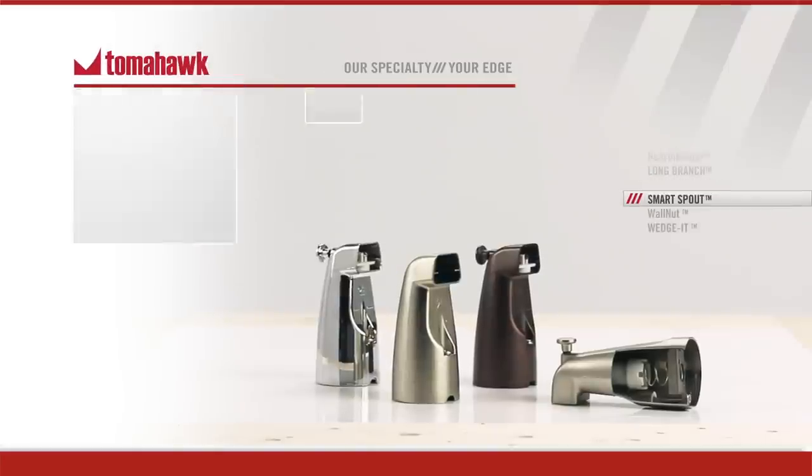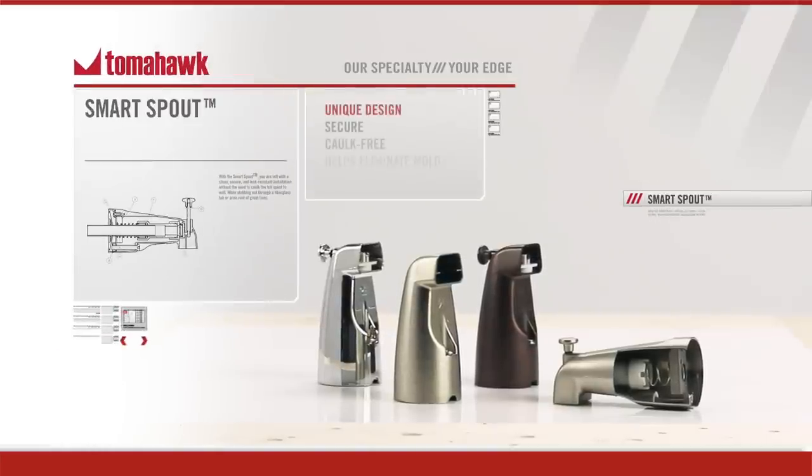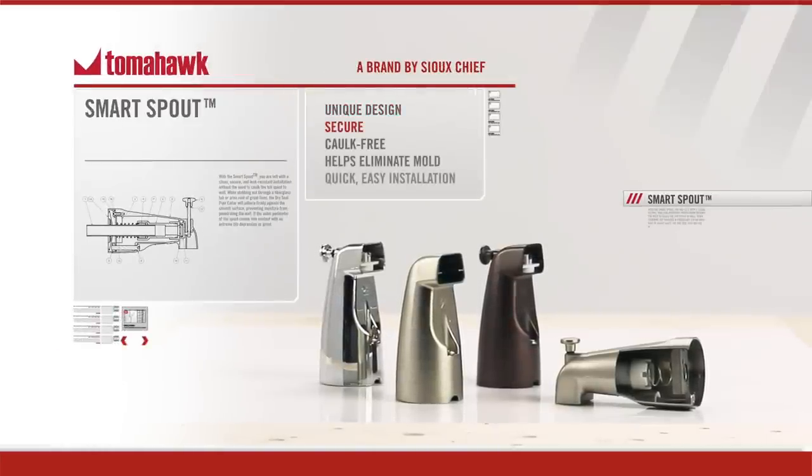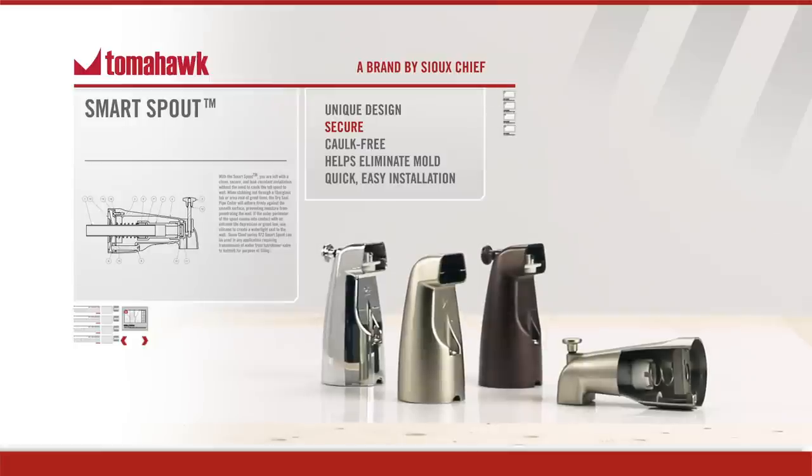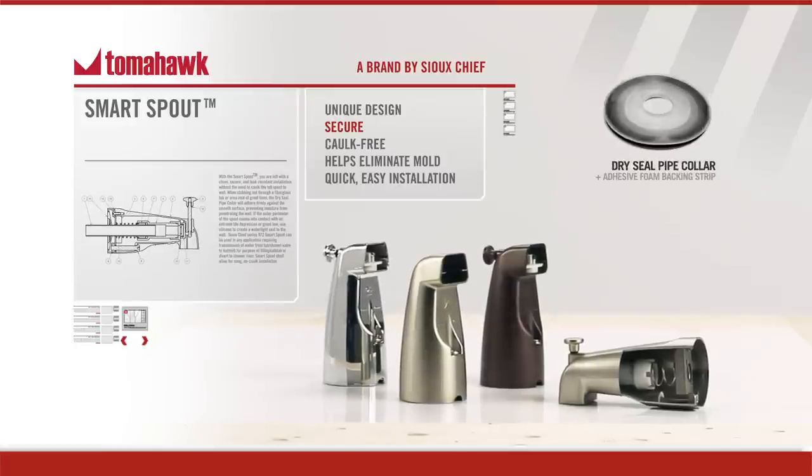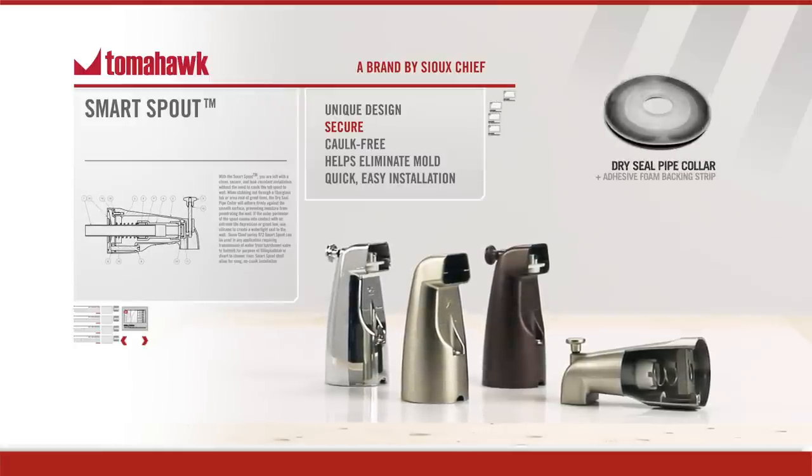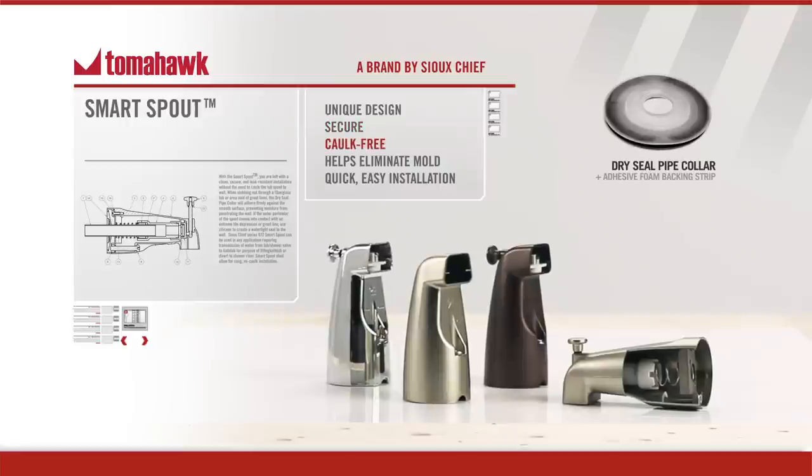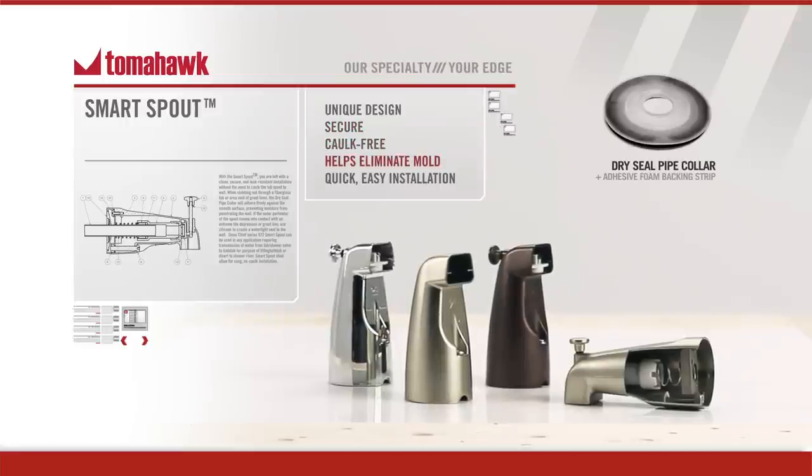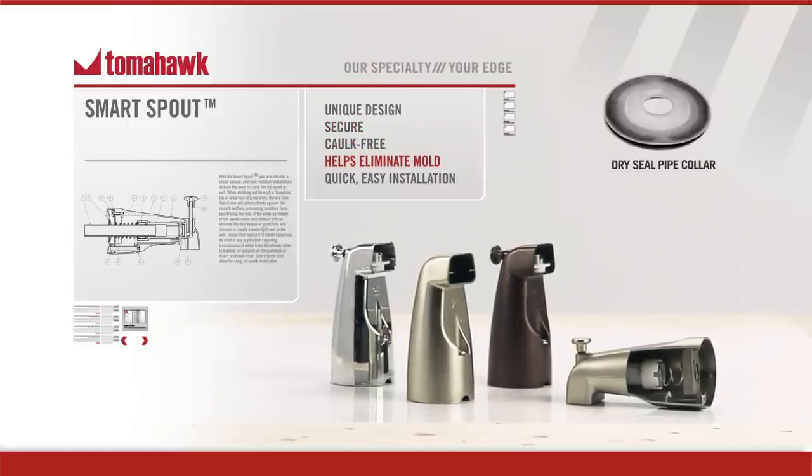The SmartSpout from Tomahawk is uniquely designed to pull itself tightly against the finished wall for a quick and secure installation. The SmartSpout includes the dry seal pipe collar that seals the copper tube and prevents moisture from entering the wall cavity. This eliminates the need to caulk around the spout and helps eliminate the chance of mold behind the wall.